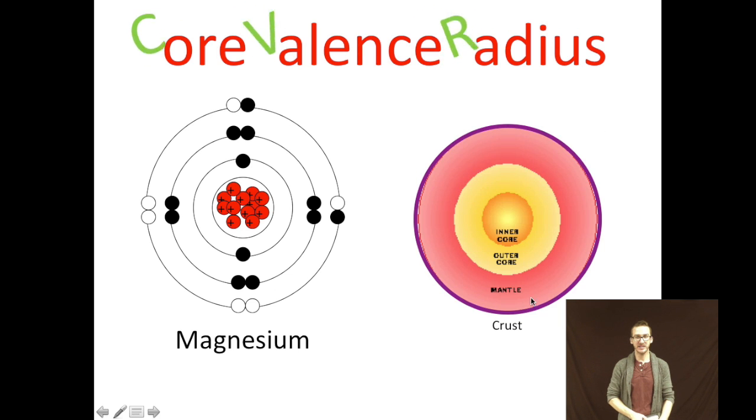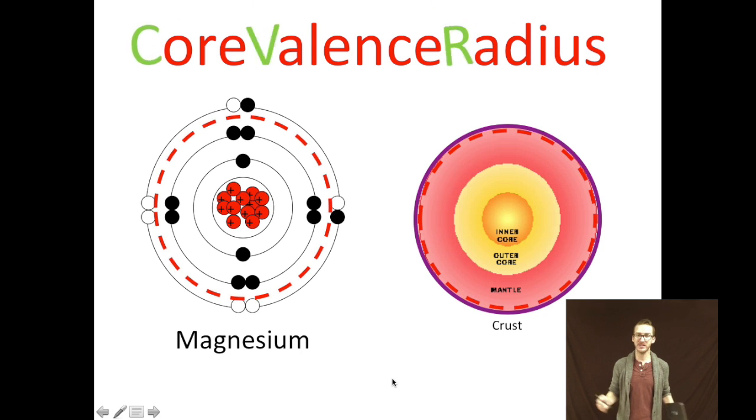You've got the crust, aka our valence level, and all these other inner level core layers. The CVR model separates the valence level or the crust from all of the inner stuff. And the reason why we do that, again, it's the valence level that helps determine the chemistry.